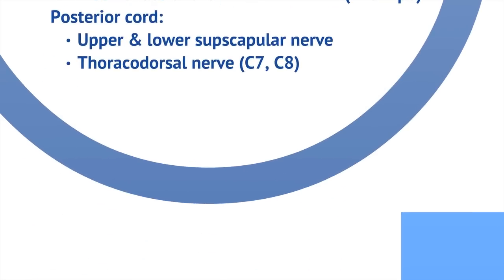Then we have the posterior cord, which gives off the upper and lower subscapular nerves, which we talked about previously. And then the thoracodorsal nerve, which supplies the latissimus dorsi, the largest muscle at the back.